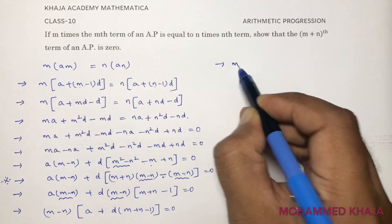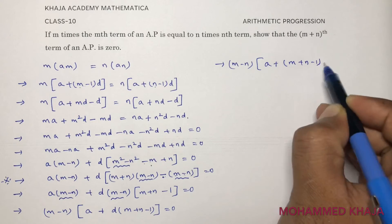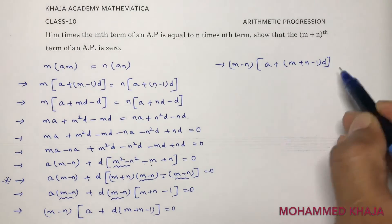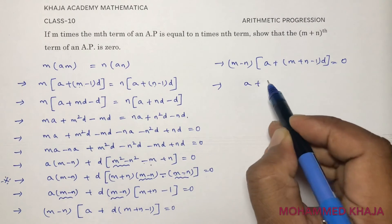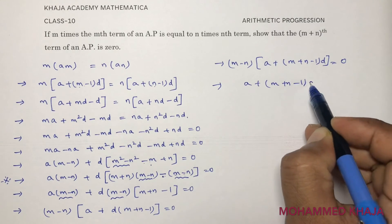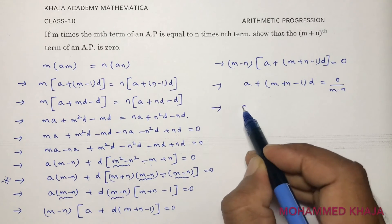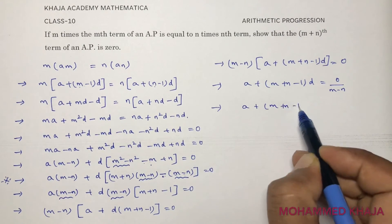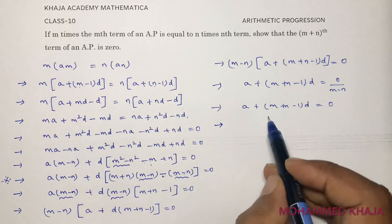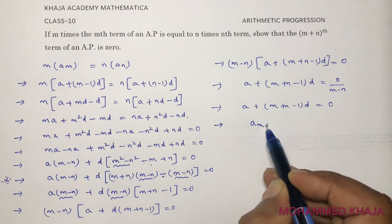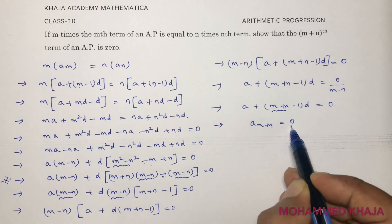You will be left with a + d(m + n − 1) equals 0. So: (m − n) times [a + (m + n − 1)d] equals 0. Dividing both sides by (m − n), we get a + (m + n − 1)d equals 0. This is nothing but the (m+n)th term. Therefore, a_{m+n} = 0.